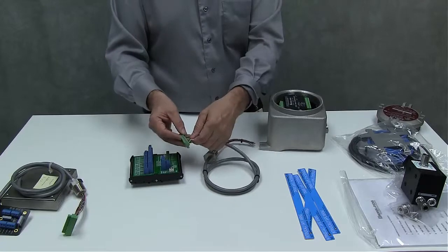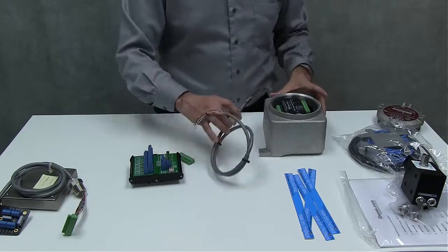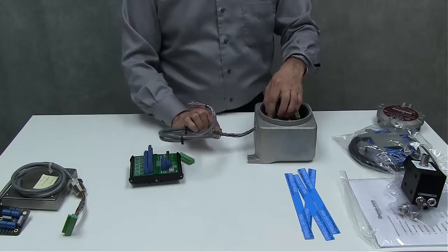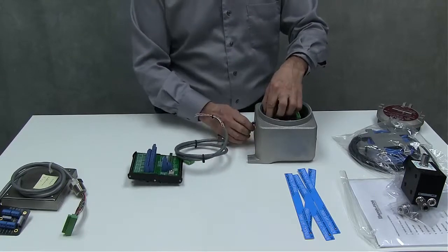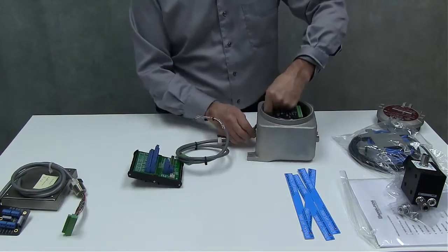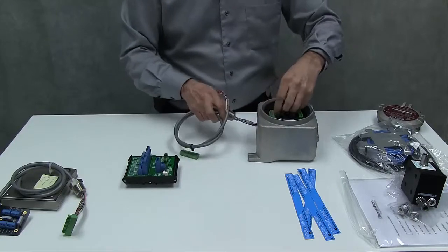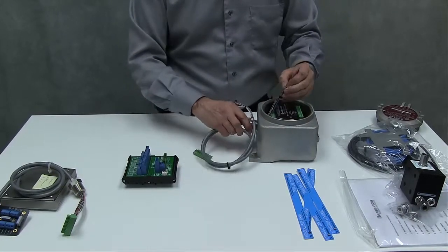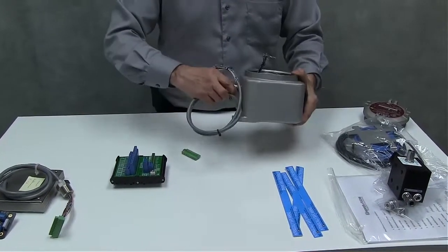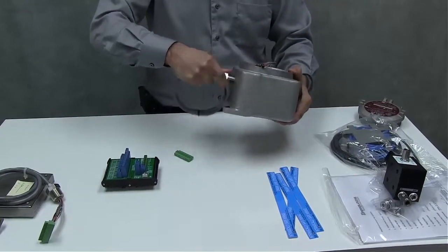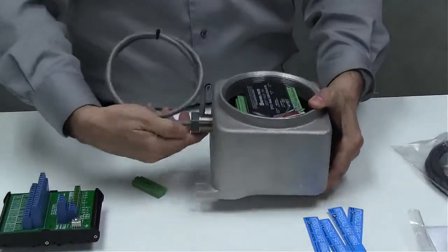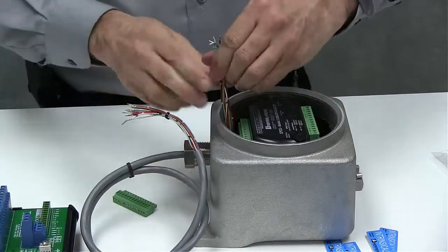So once this is terminated then you can screw this into the enclosure through this cable clamp. And so this would screw in here, you have to have at least five threads to maintain the explosion proof. So that would go in there.